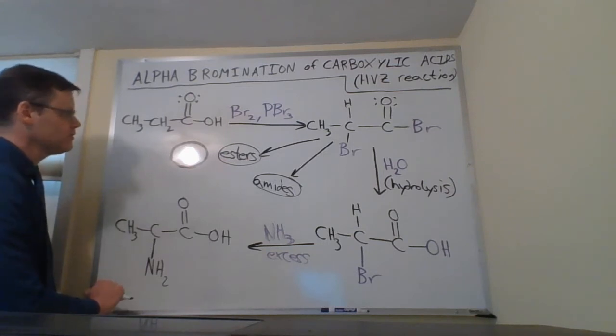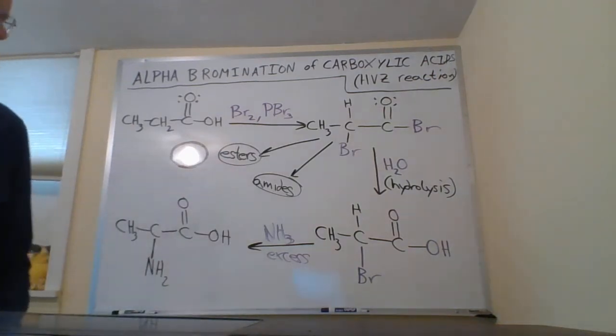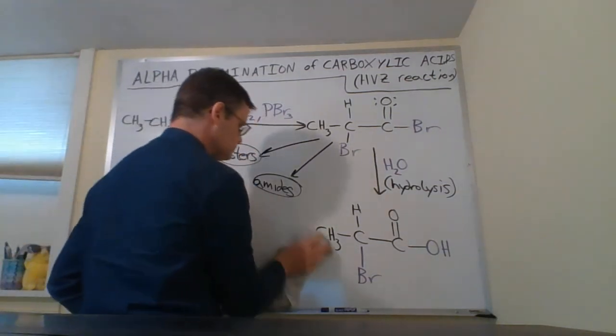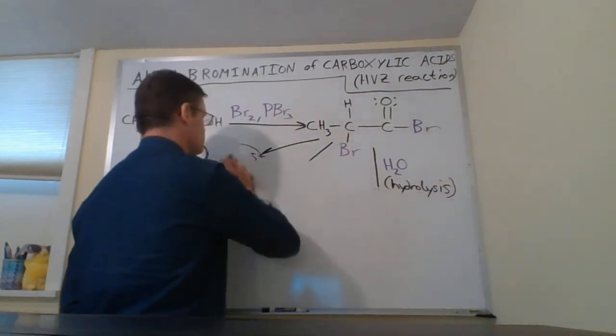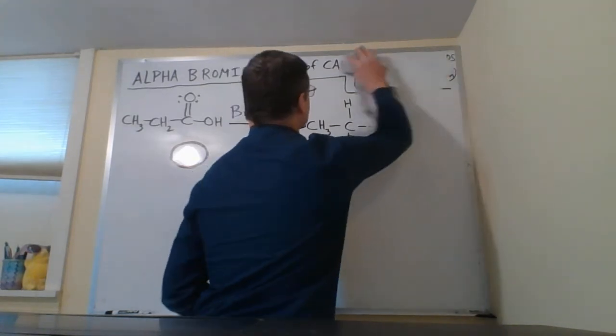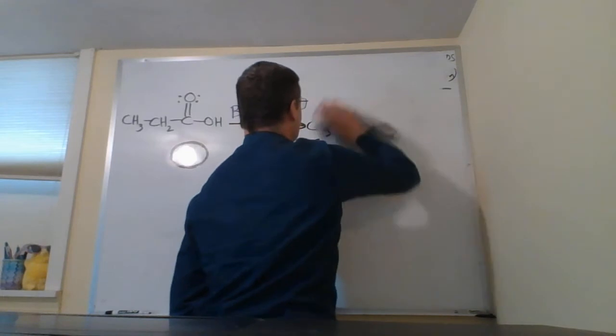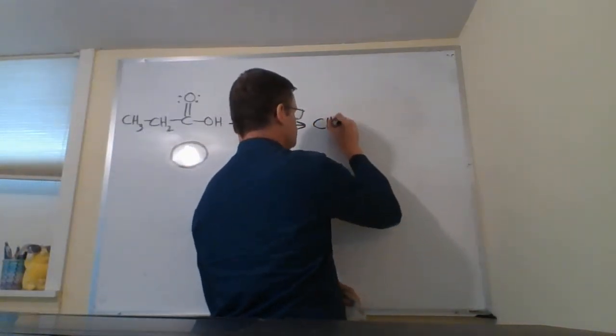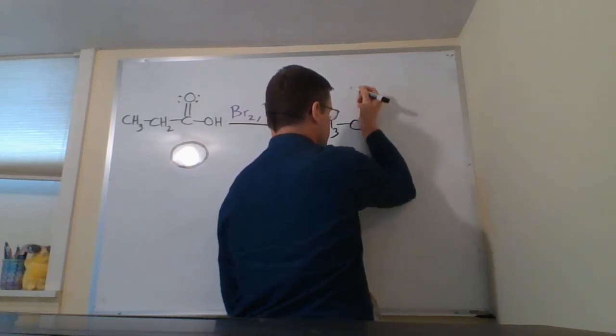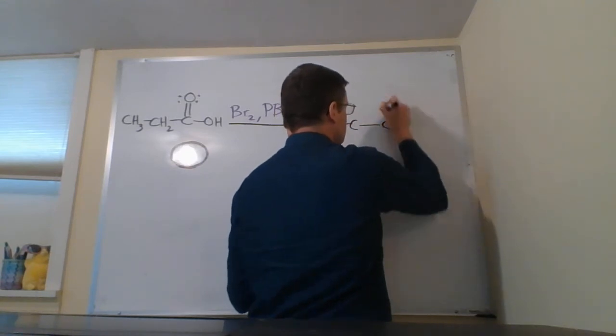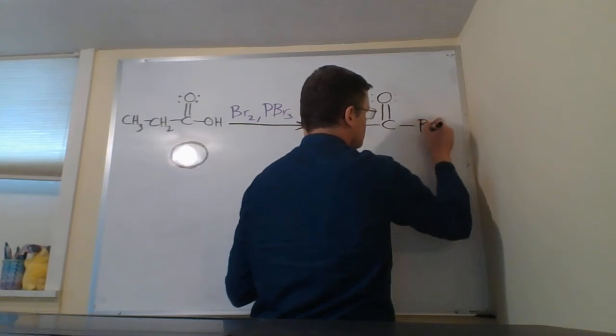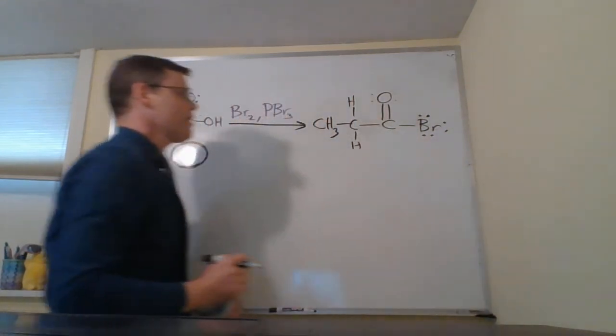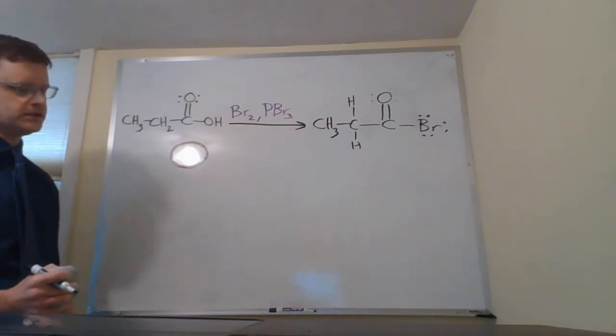Let me go into a little bit more detail about what's happening here for some of this. All right, so the first thing that's going to happen is we're gonna turn our carboxylic acid into an acid bromide.